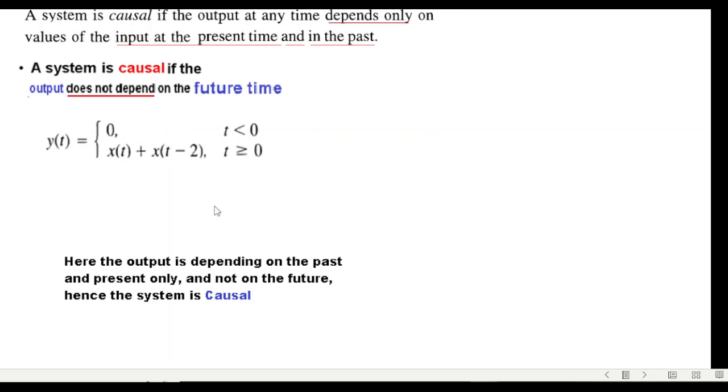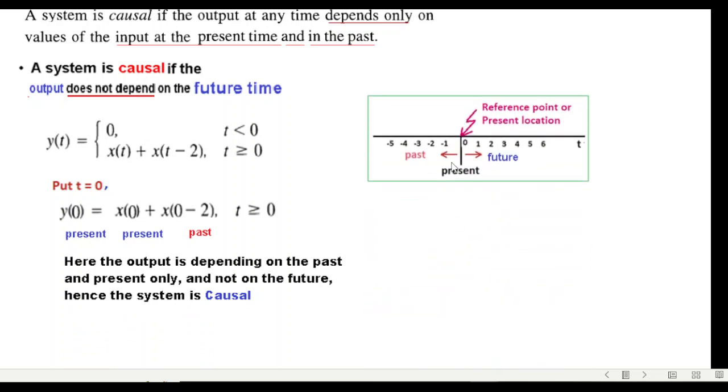Third one we follow the same technique, putting t equals zero, and there is no doubt in here that this is present, this is present, and this is a past value. And therefore the system is causal. x(0)x(0) and x(-2) is the past value, so the system is causal.